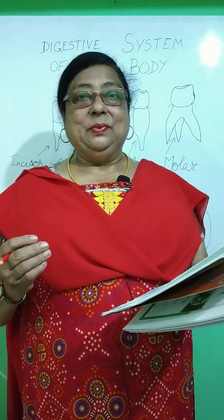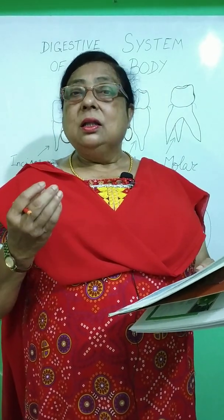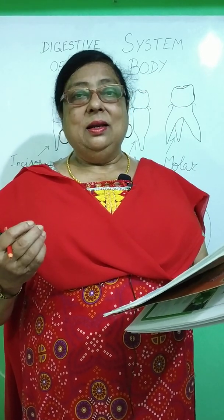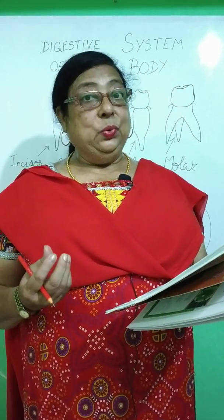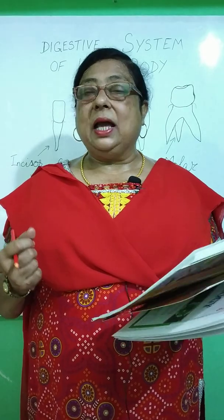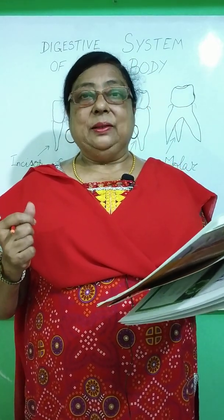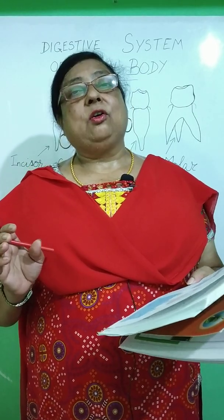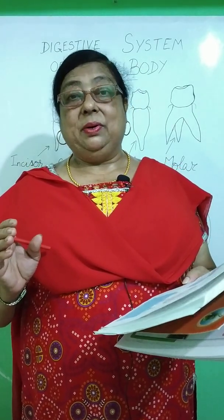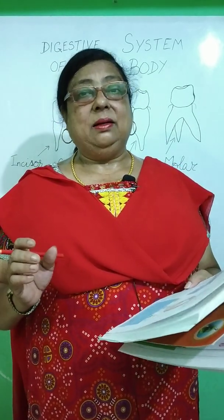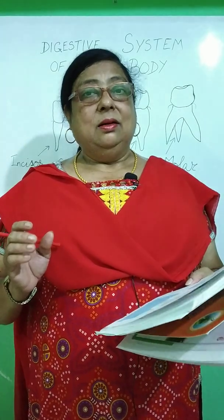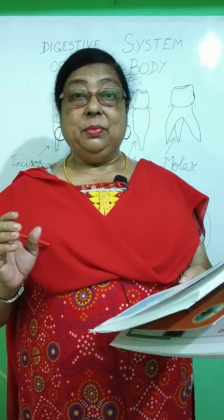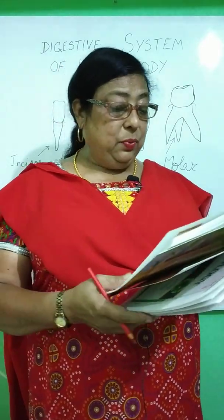As the child grows, the primary teeth fall out one by one and are replaced by permanent teeth. This set of permanent teeth comprises 32 in number in an adult human being.